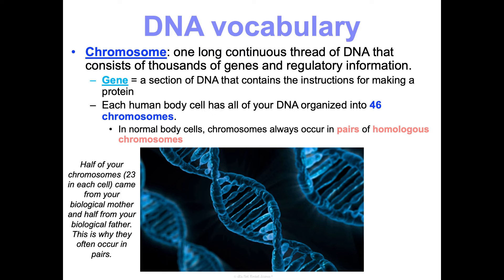Why are chromosomes similar? When fertilization occurred, half of your chromosomes — 23 — came from your biological mother's egg, and the other 23 came from your biological father's sperm. This is why they occur in pairs: chromosome 13 from your mother's egg is similar to chromosome 13 from your father's sperm — they're talking about the same information but may give different instructions. I like to think of your DNA as a giant textbook organized into 46 chapters, where chapter pairs are similar but may say different things.